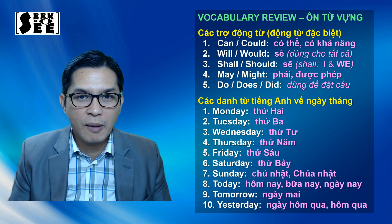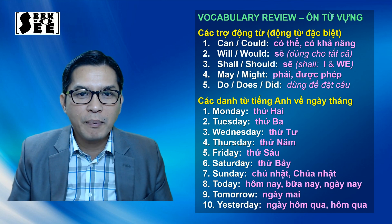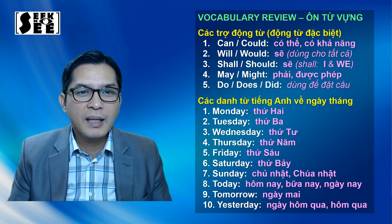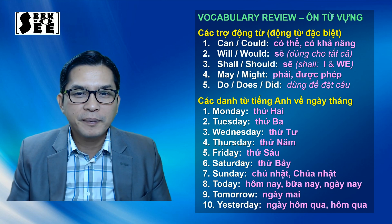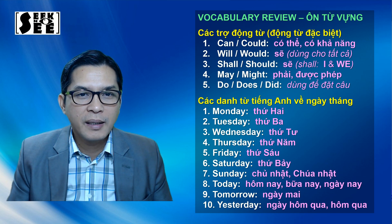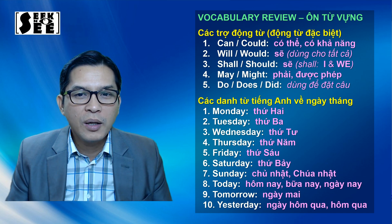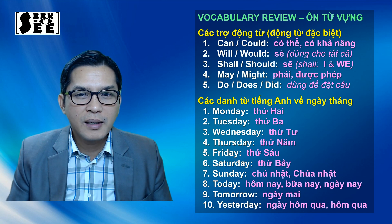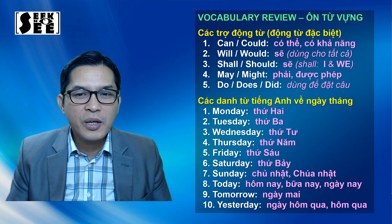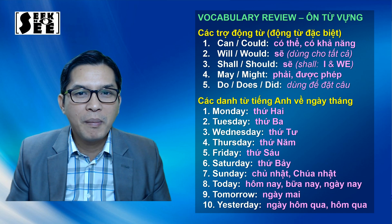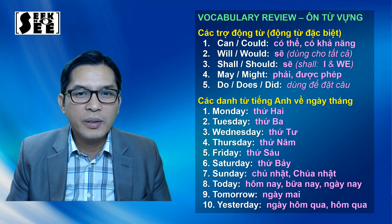Bởi vì nó biến thành một trợ động từ. Chúng ta ôn lại 5 động từ đặc biệt và trợ động từ này. Vì không có nhiều cho nên quý học viên cố gắng học thuộc những từ này. Số 1: Can, could - có thể, có khả năng. Số 2: Will, would - có nghĩa là sẽ. Số 3: Shall, should - cũng có nghĩa là sẽ. Số 4: May, might - có nghĩa là phải hay là xin phép, được phép. Số 5: Do, does, did.